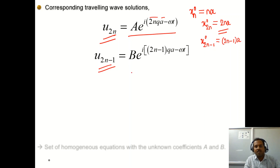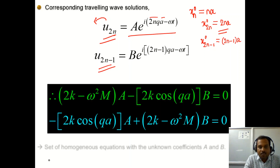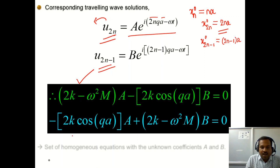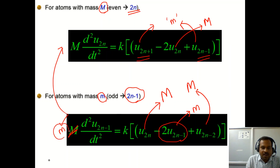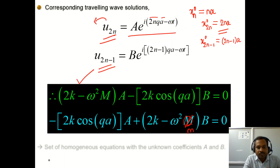Substituting these solutions back into the equations of motion, we obtain a set of homogeneous equations: (2k − ω²M)·A − 2k·cos(qa)·B = 0, and −2k·cos(qa)·A + (2k − ω²m)·B = 0. Here A and B are the unknown displacement amplitudes, M is the heavier mass in the first equation, and m (small) is the lighter mass in the second equation.